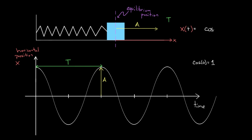Just cosine alone isn't going to do it, because cosine only gets as big as one, but this thing has to get as big as A—whatever A is. My simple harmonic oscillators aren't always going to have an amplitude of one, so I need some variable that will represent what the amplitude is for that given simple harmonic oscillator. Let me make this less abstract.